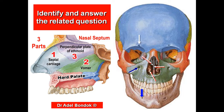These structures are the middle concha and the inferior concha. Their function is to increase the surface area of the nasal cavity. This fissure is the superior orbital fissure, and this one is the inferior orbital fissure.